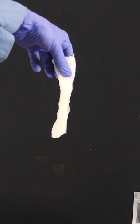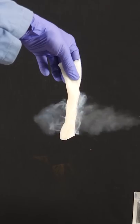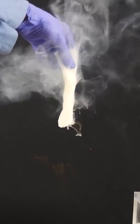You can also just put the ammonia on a cloth near the hydrogen chloride, and you'll get the same type of fuming.